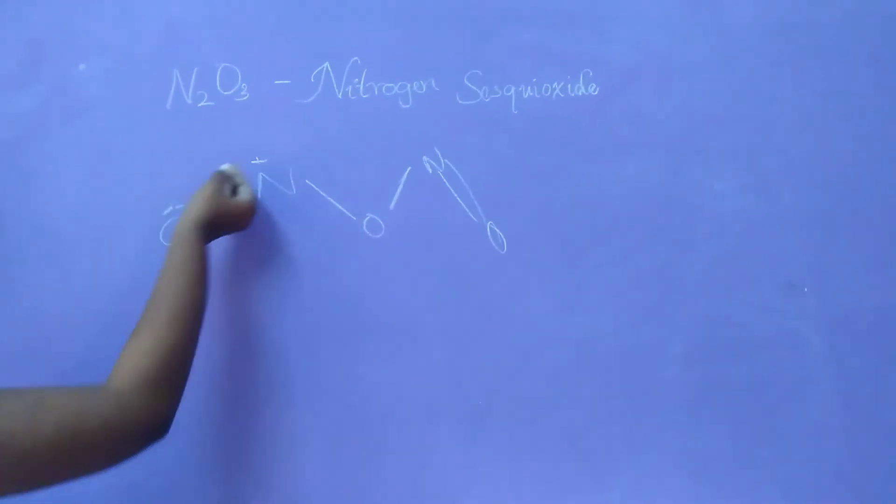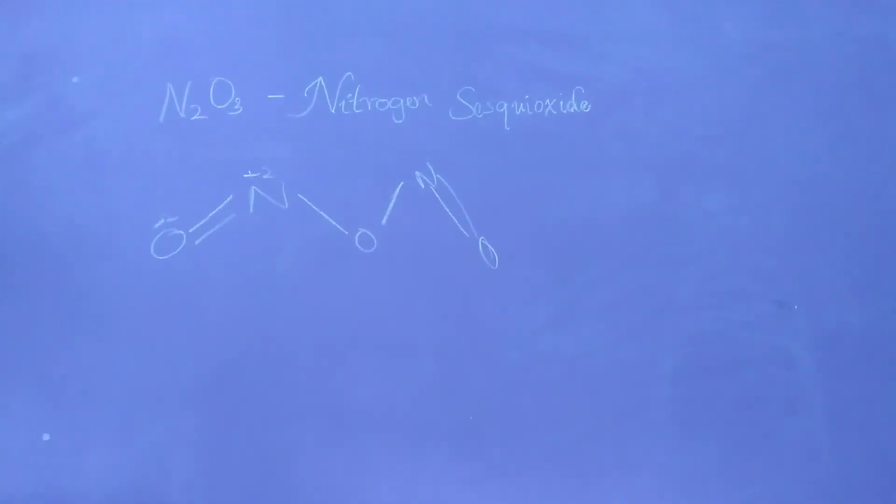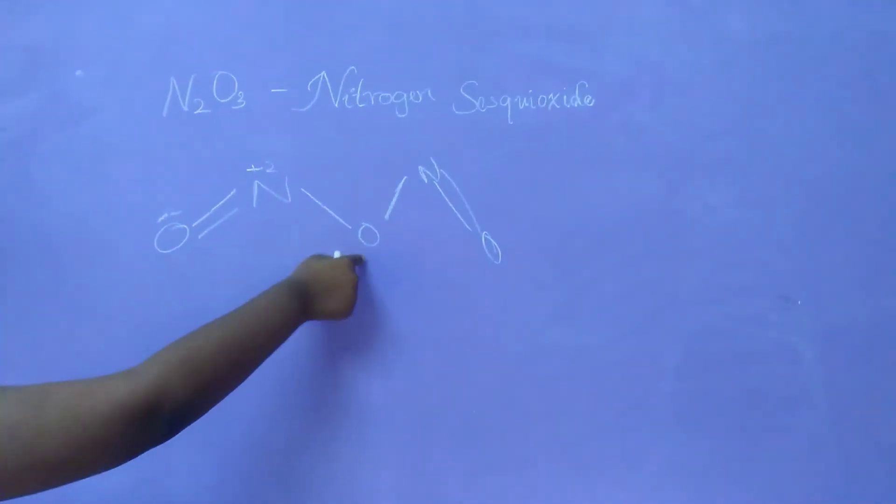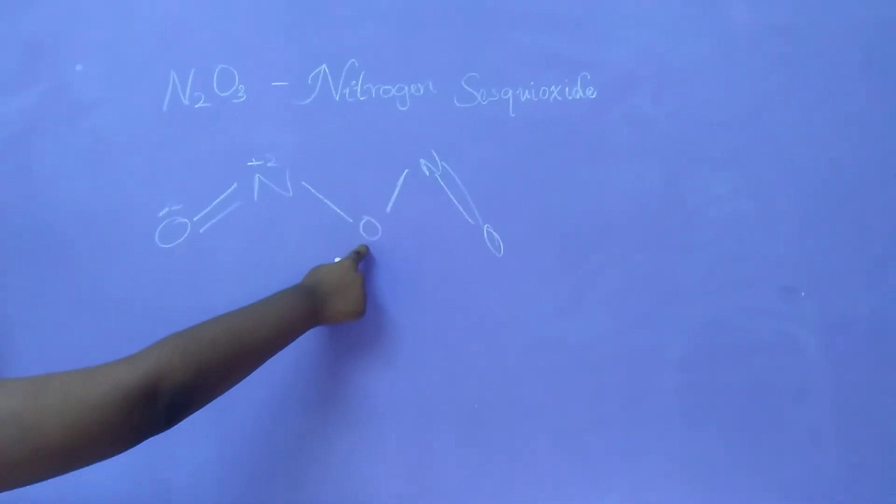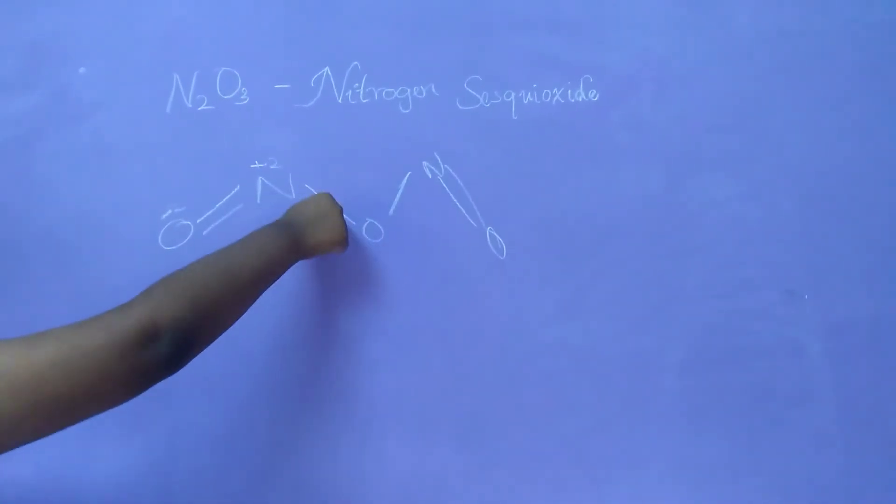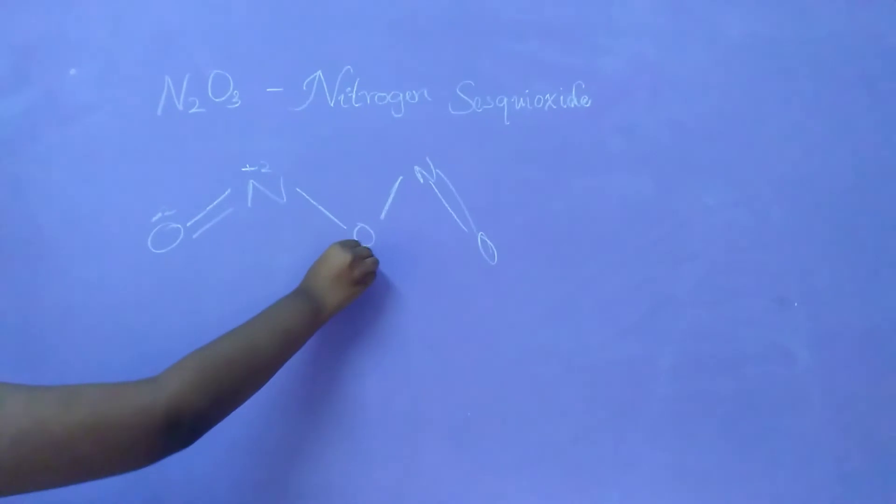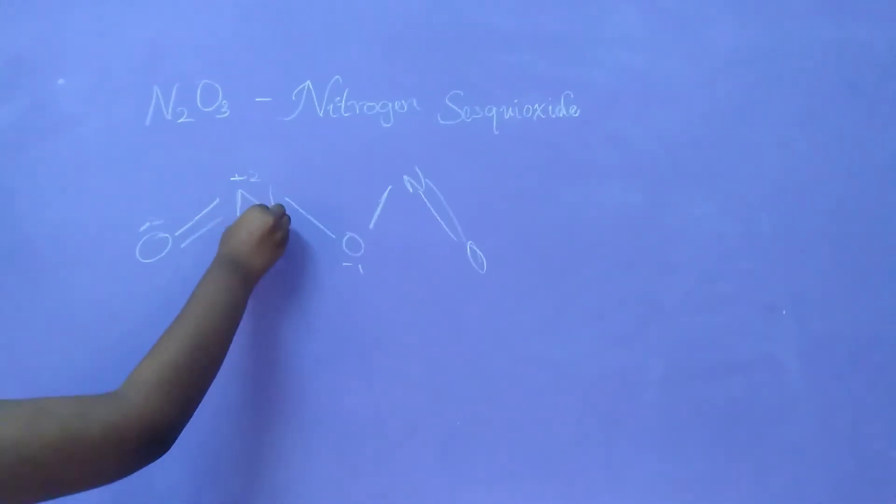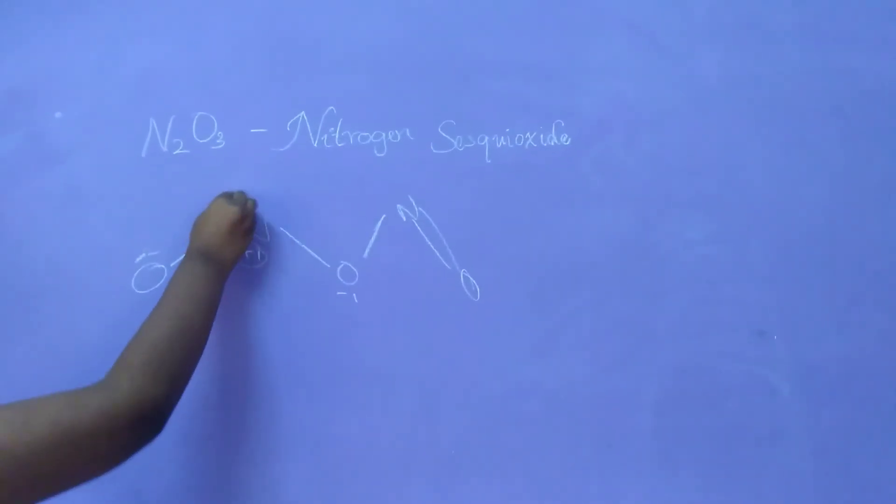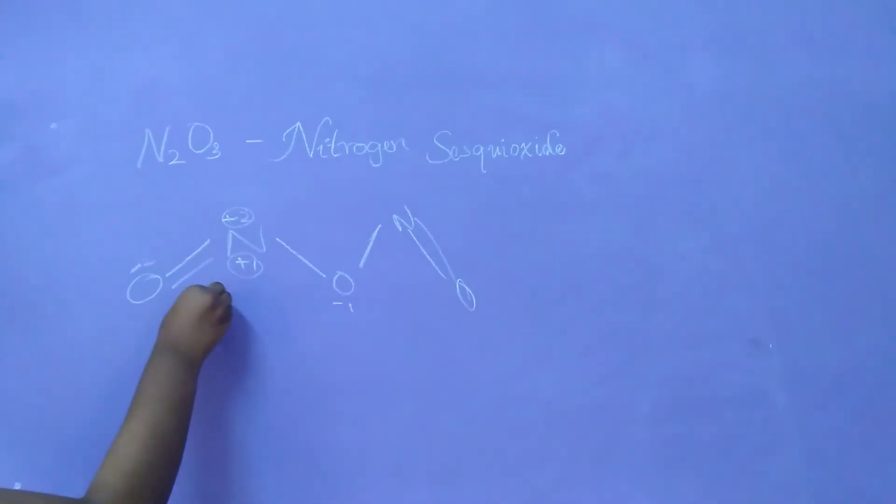So it will be minus 2, and here it will be plus 2. And in the same way, here you see one oxygen with one single bond. So here minus 1, and here plus 1 again. So here you see plus 1, minus 2. Add all together. That is plus 2, plus 1. That will be plus 3.